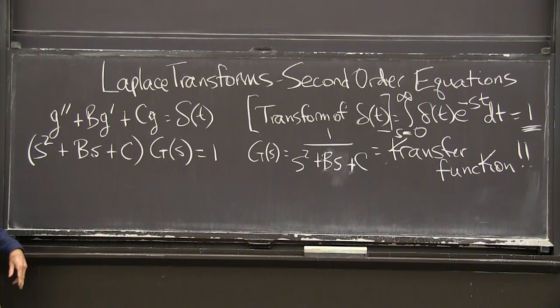And the transform of the delta function is 1. And the derivative, you remember, has an extra factor s. The transform of the derivative from the first Laplace transform video was s times g of s. And the second derivative, another s, so s squared times g of s.